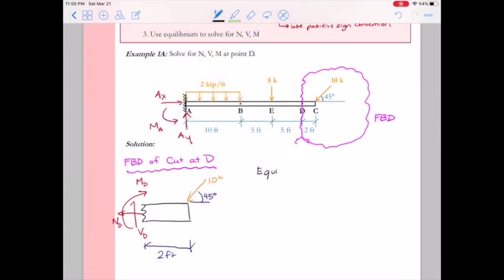In statics we do free body diagrams and then we do equilibrium equations. So nothing changes here in mechanics of materials. We have a nice free body diagram, now let's do equilibrium. For equilibrium we'll start with sum forces in the x, and so that'll give us negative axial force of D minus 10 kips cosine 45 degrees equals zero. So we do a little bit of math, the axial force at D is negative 7.071 kips.